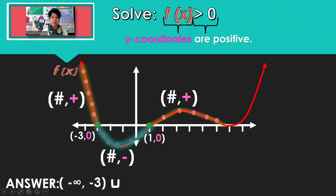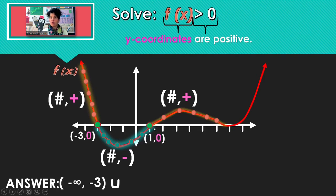If I plug in 2, 2.5, 3, 3.1 — all of those x's that I substitute and get positive y-values are the x's in our solution. So far we've got not 1, because the y-coordinate is 0, but all the x's after that.